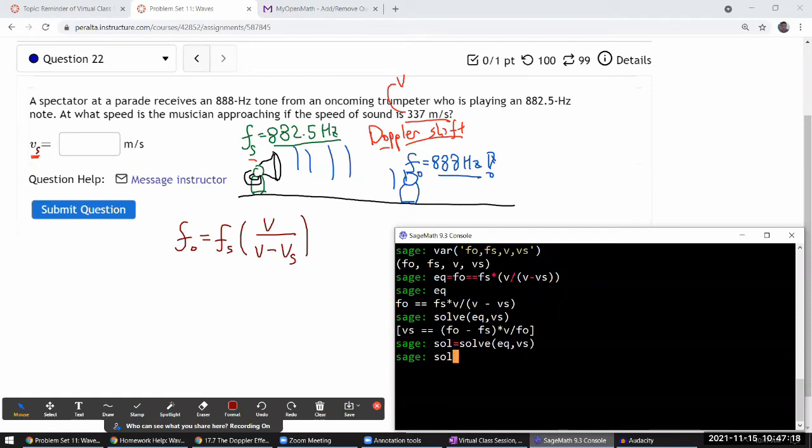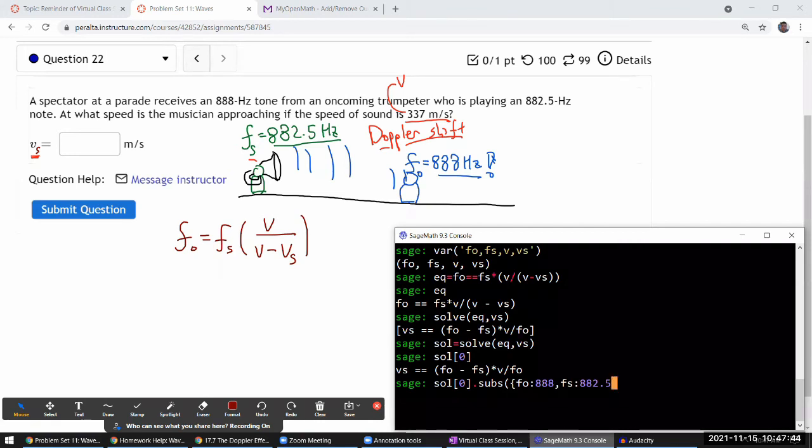So I can take this. And by the way, it returns an array. So that's why I'm taking the zeroth element, which is the first element in the array. And with this, I can substitute in values. I can substitute in, okay, observed frequency is 888 hertz. The source frequency is 882.5 hertz. And I just checked to make sure the observed frequency is higher. That's what you expected it to be.